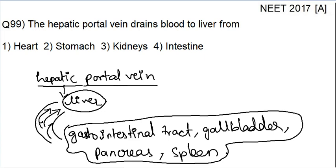Now, can you tell me what this blood will be rich in? This blood will be rich in nutrients. Why? Because these are all major parts of our digestive system. What happens in the digestive system? The food that we eat — all the nutrients present in the food are absorbed into the blood. So, where does it happen? It happens generally in the intestine — the gastrointestinal tract. So the blood coming out of this will be rich in nutrients and also toxins.